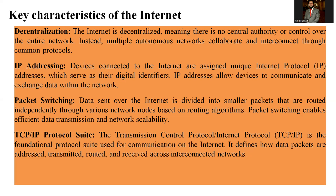IP address: devices connected to the Internet are assigned unique Internet Protocol addresses which serve as digital identifiers. IP addresses allow devices to communicate and exchange data within the network. For example, www.youtube.com has a URL address, or sometimes a numeric address like 162.21. IP addresses allow us to communicate and exchange data across the network.